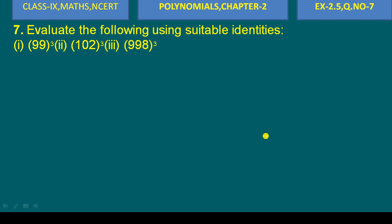Hello everyone, today we are going to solve question number 7 — evaluate the following using suitable identities. This is for Class 9 Maths NCERT, Chapter 2: Polynomials, Exercise 2.5. Today we will do question number 7 and question number 3. Question number 3 is 998 to the power 3.